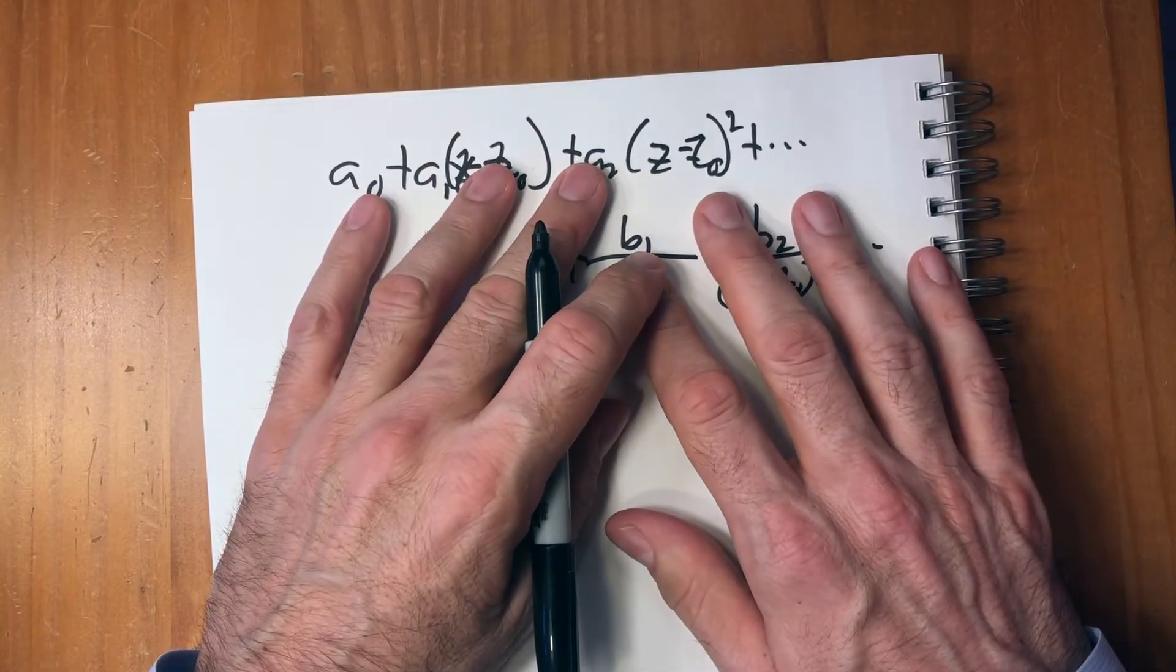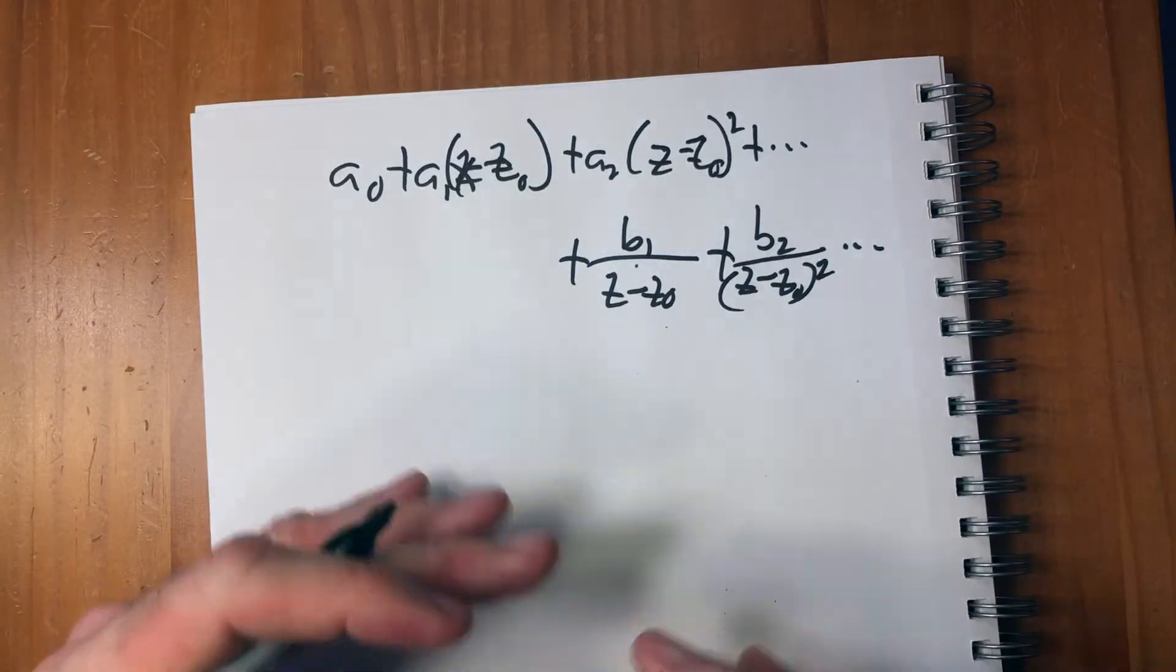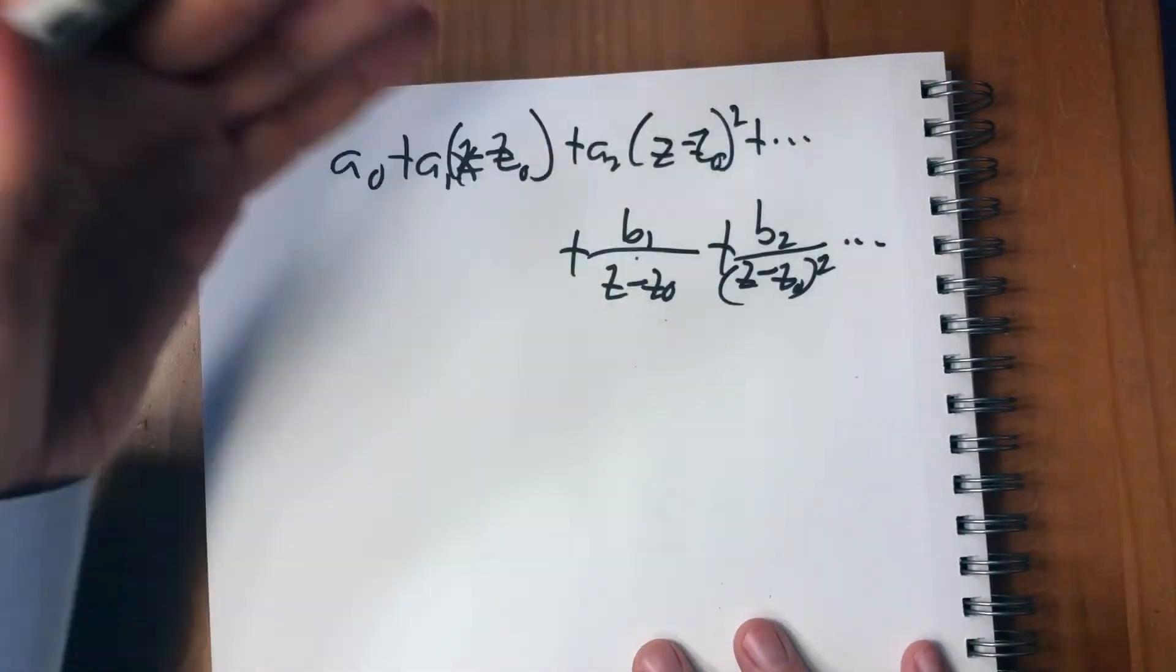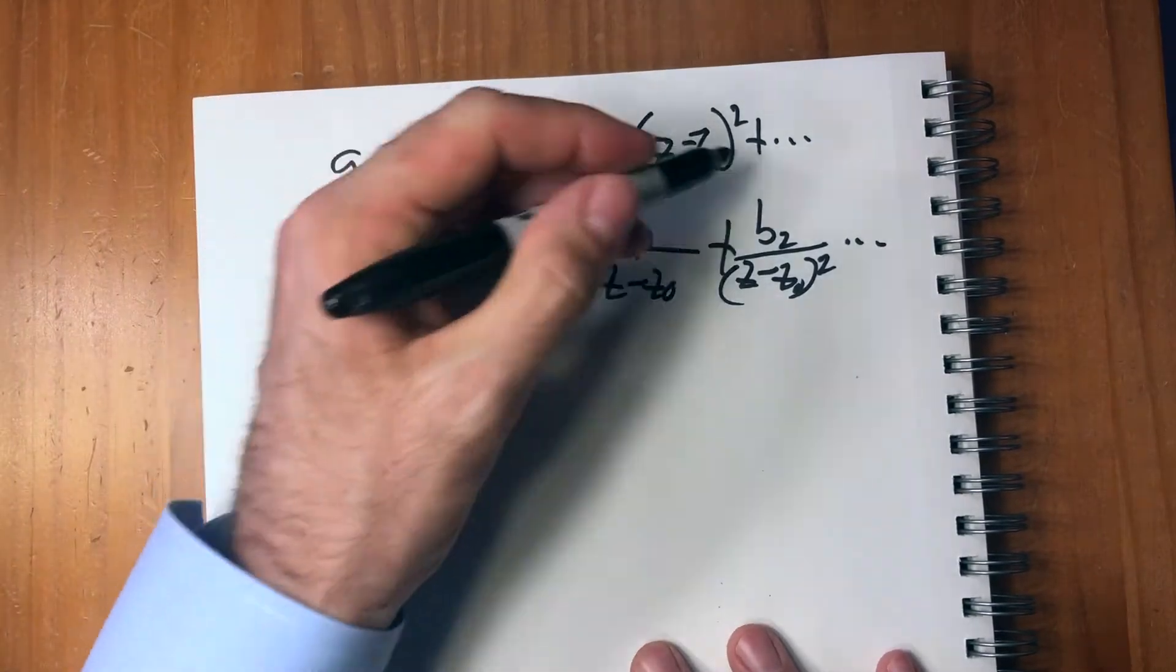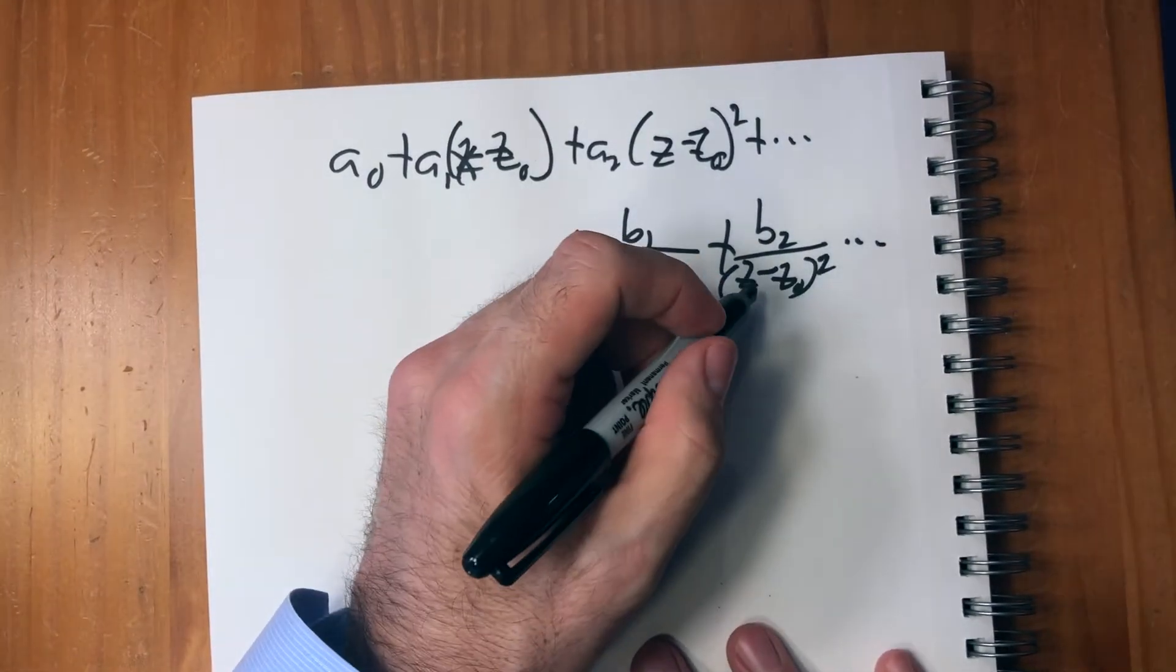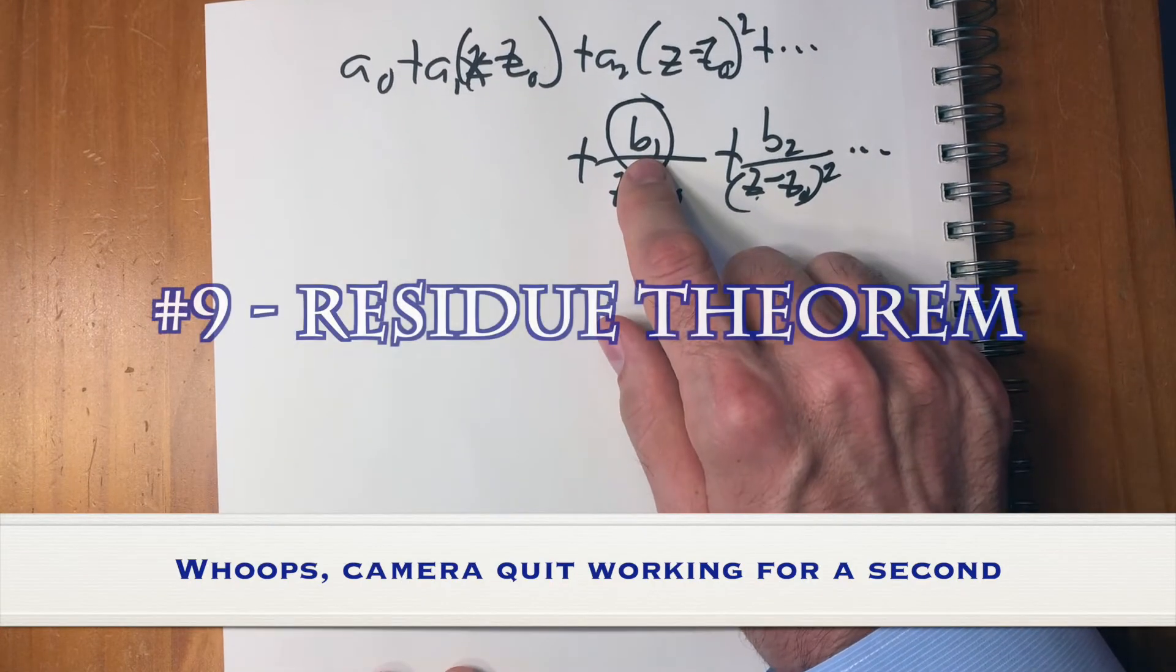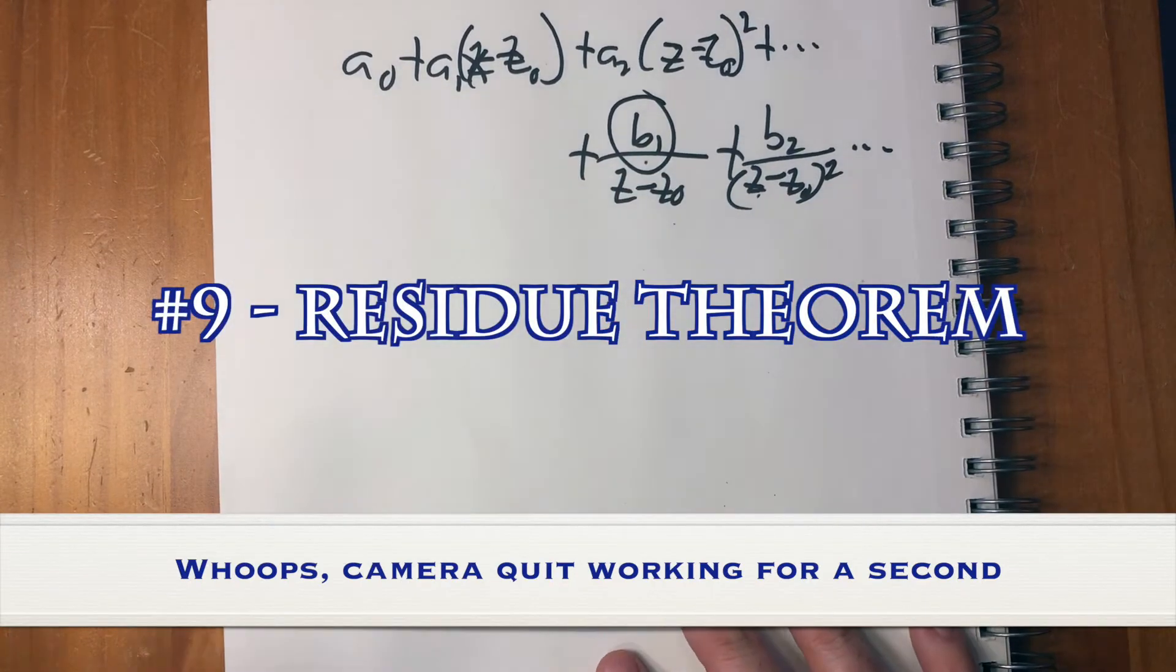Plus B one over Z minus Z zero. So you can manipulate these and all of these will disappear. If you take the derivative enough, you'll end up with a zero for all of this. And this one, this one won't disappear. This is the residue.